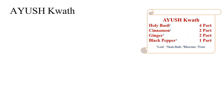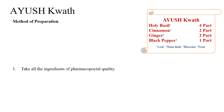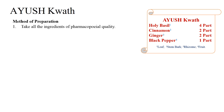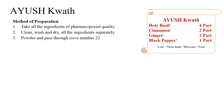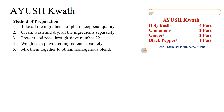The formulation has holy basil or tulsi, cinnamon, ginger, and black pepper in the ratio of 4:2:2:1. Method of preparation: take all the ingredients of pharmacopoeial quality. Clean, wash, and dry all the ingredients separately. Powder and pass through sieve number 22. Weigh each powdered ingredient separately. Mix them together to obtain a homogeneous blend and store in an air-tight container to protect from light and moisture.